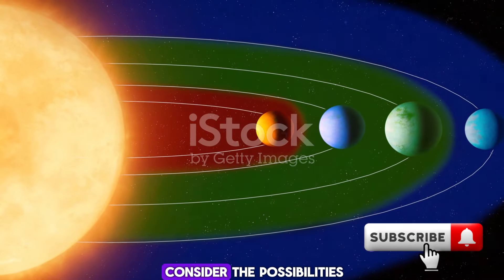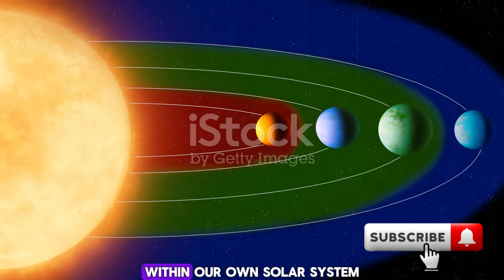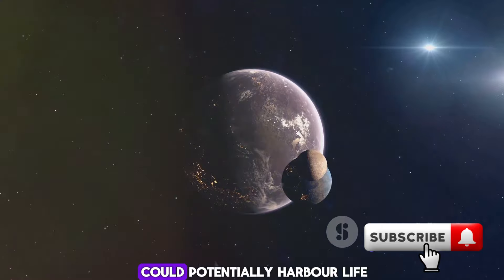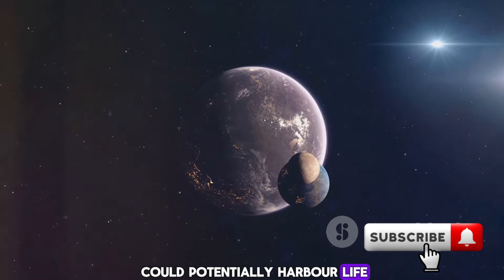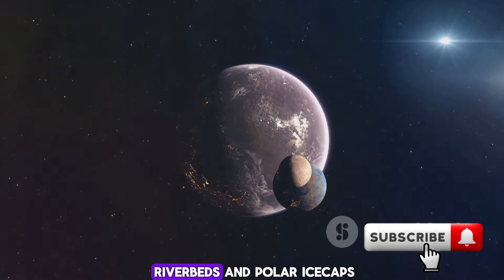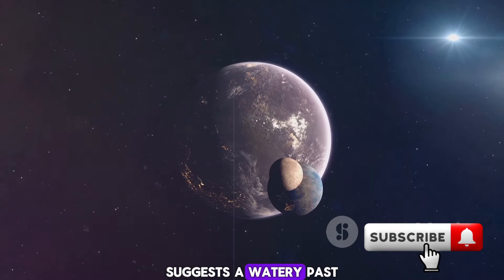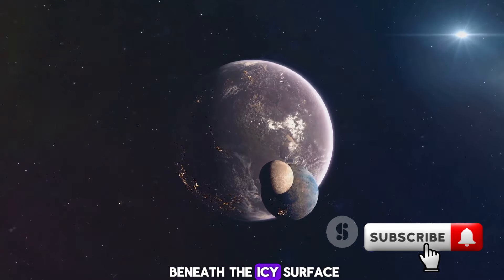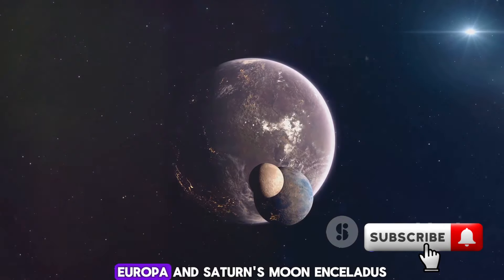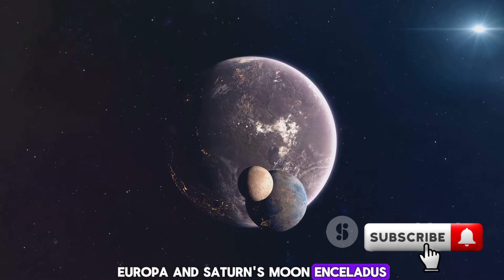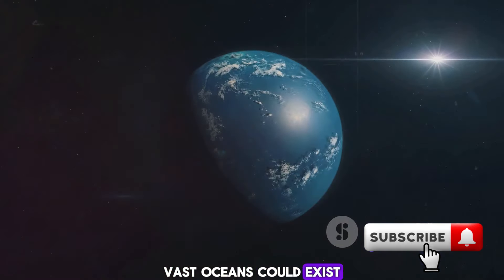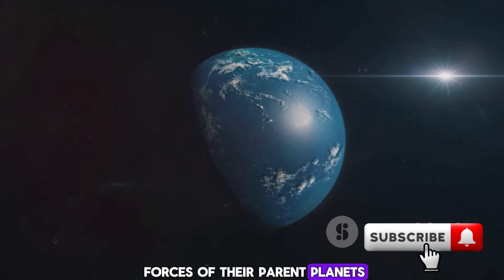Take a moment and consider the possibilities. Within our own solar system, there are places that could potentially harbor life. Mars, with its ancient riverbeds and polar ice caps, suggests a watery past. Beneath the icy surface of Jupiter's moon Europa and Saturn's moon Enceladus, vast oceans could exist, warmed by the tidal forces of their parent planets.